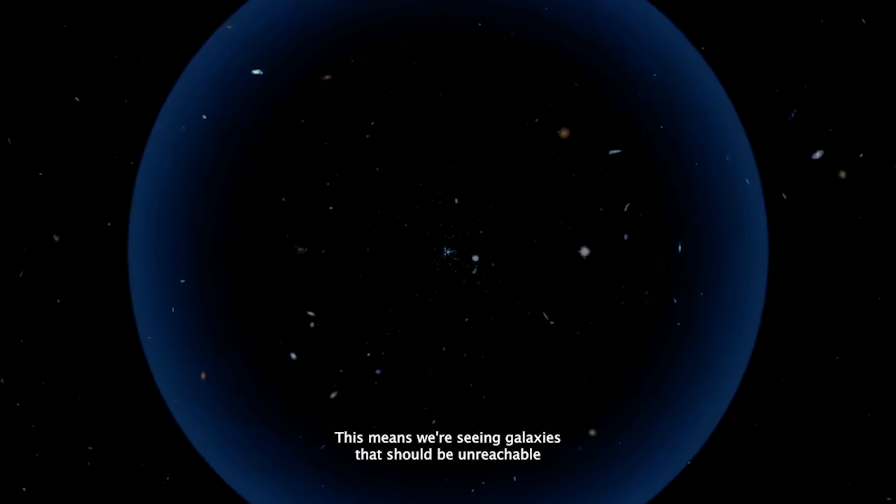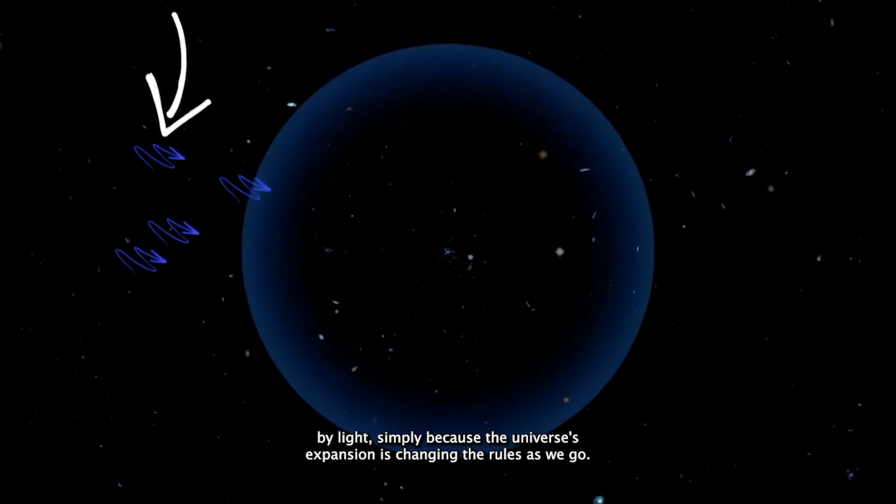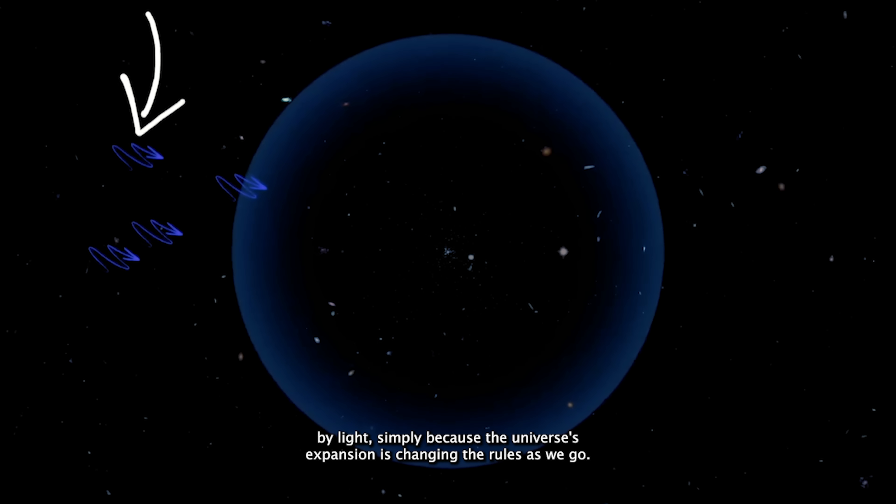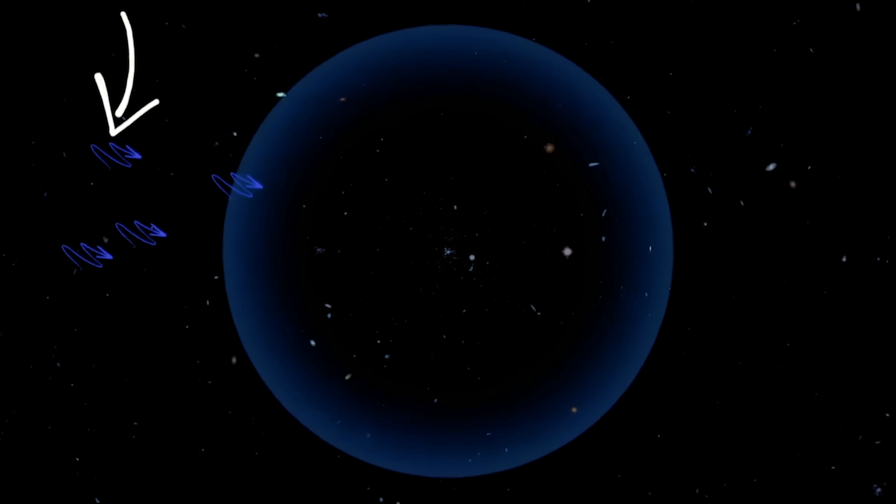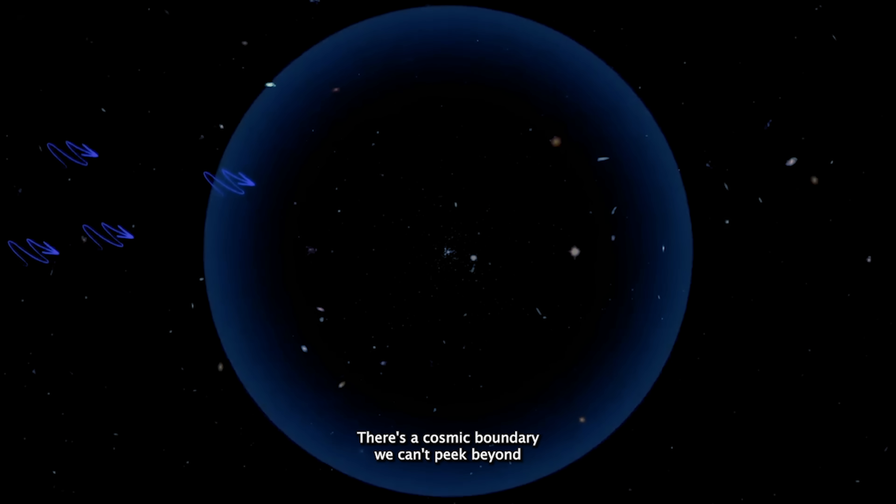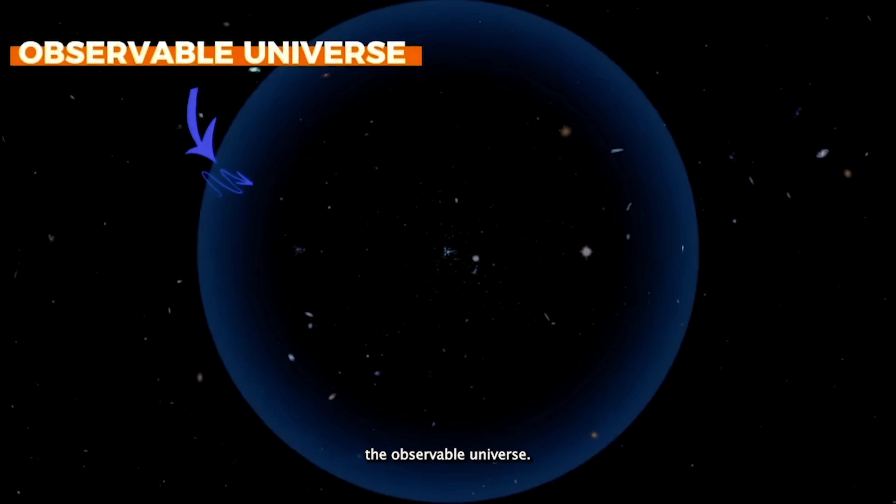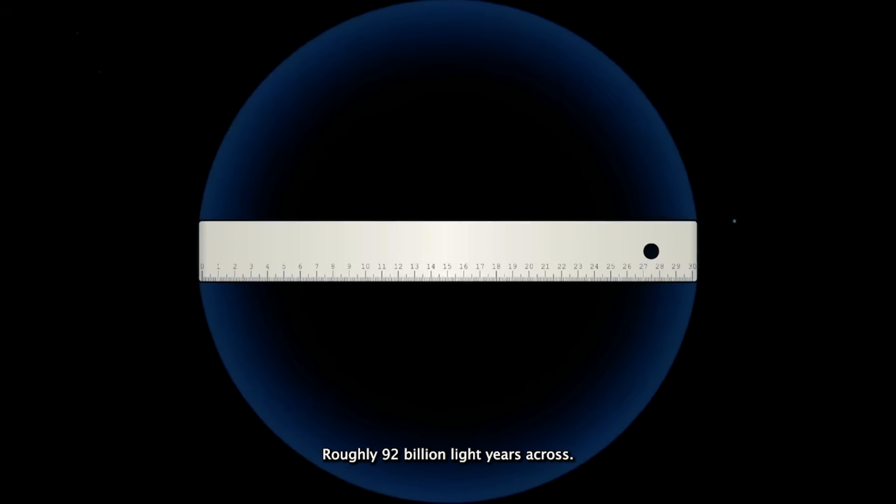This means we're seeing galaxies that should be unreachable by light simply because the universe's expansion is changing the rules as we go. But this isn't limitless. There's a cosmic boundary we can't peek beyond. The observable universe. A bubble roughly 92 billion light years across.